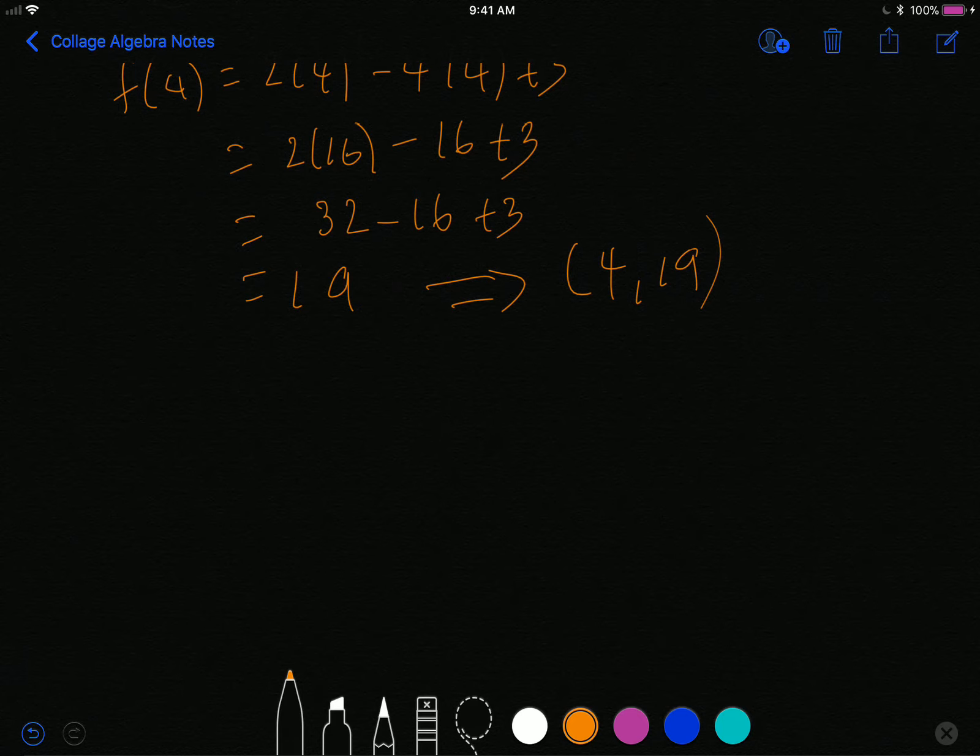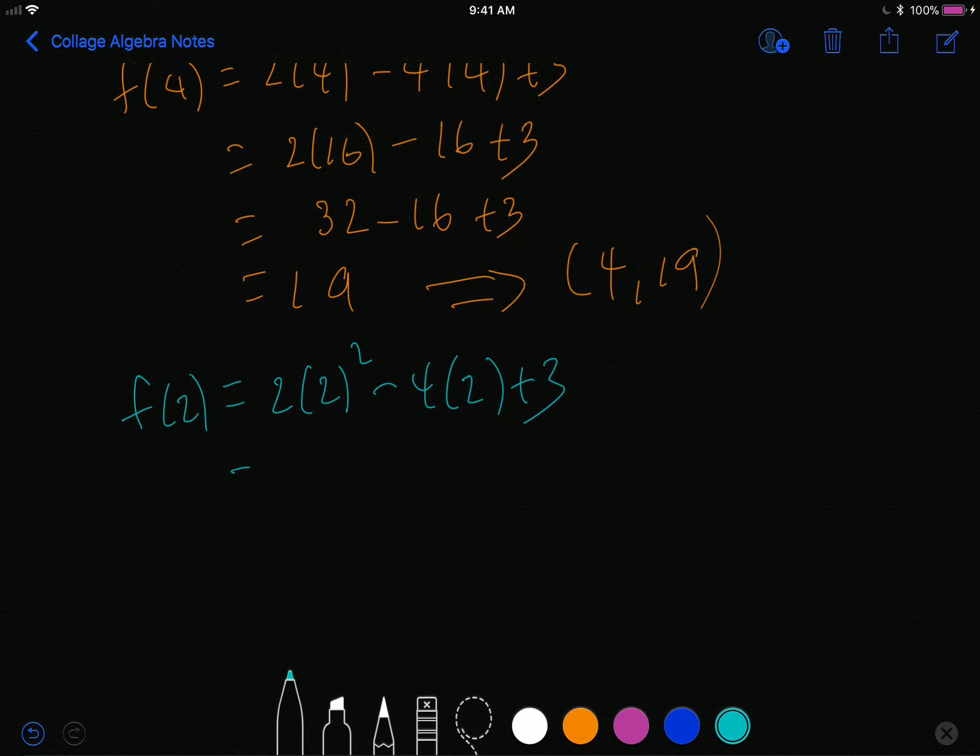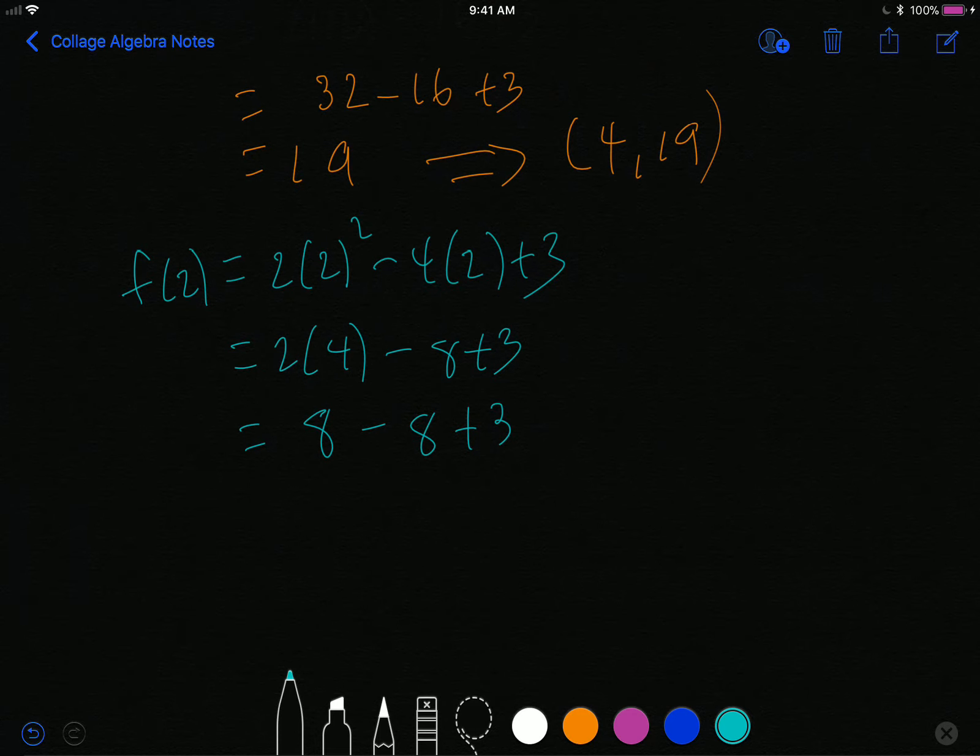And then the other one, f of 2, that is 2 times 2 squared minus 4 times 2 plus 3, which is 2 times 4 minus 8 plus 3, which is 8 minus 8 plus 3, which is 3. The second point of intersection is 2 comma 3.